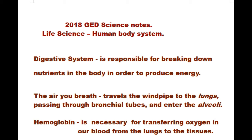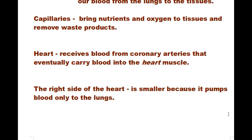The digestive system is responsible for breaking down nutrients in the body in order to produce energy. The air you breathe travels the windpipe to the lungs, passing through bronchial tubes and enters the alveoli. Hemoglobin is necessary for transferring oxygen in our blood from the lungs to the tissues.